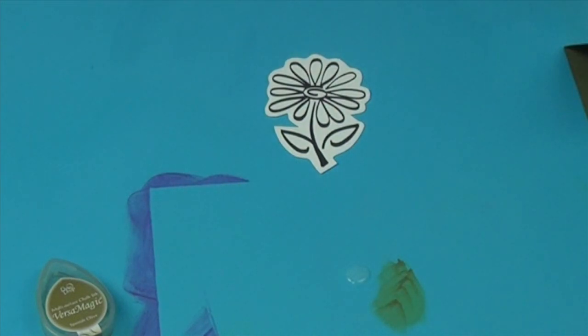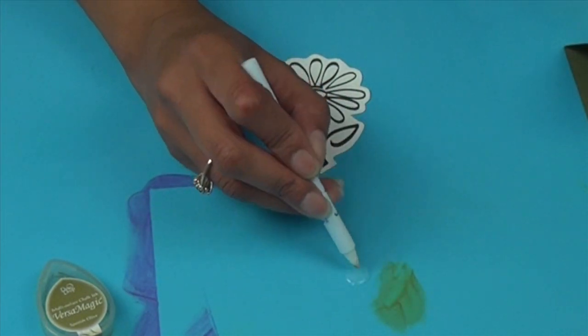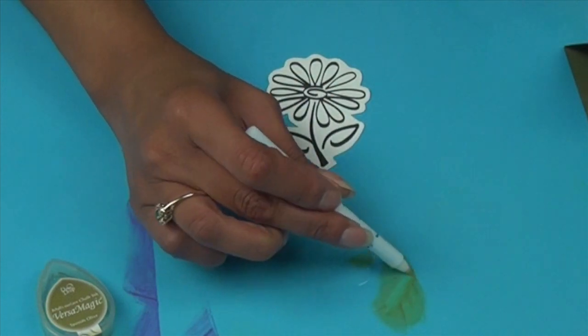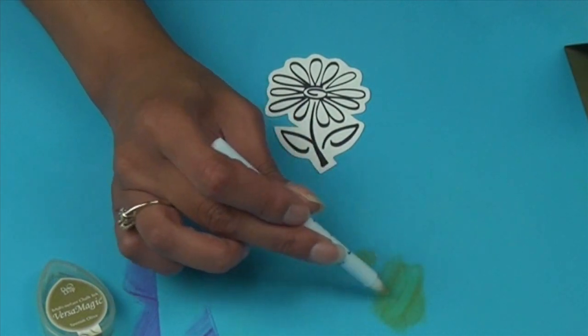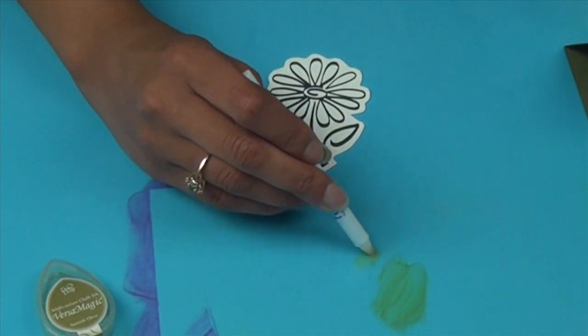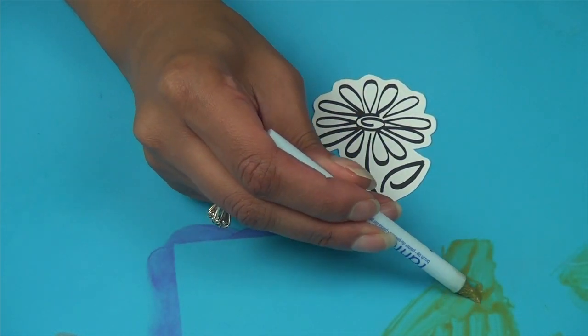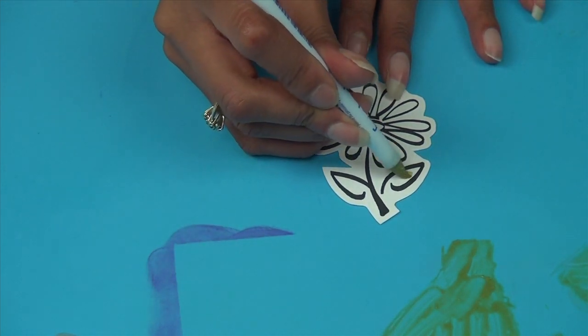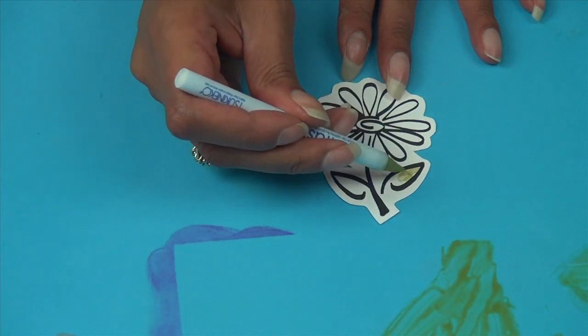Then take a Fantastix applicator. This is in the brush tip. And blend the Goosebumps with the ink so you get a nice green color, as deep as you'd like. Now I'm going to dip my Fantastix brush into the Goosebumps and just paint right over the leaves.